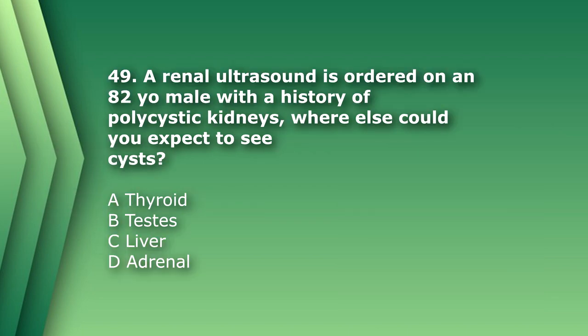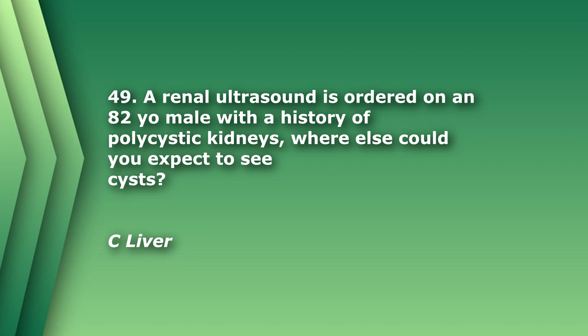Number 49. A renal ultrasound is ordered on an 82-year-old male with a history of polycystic kidneys. Where else could you expect to see cysts? A. Thyroid. B. Testes. C. Liver. D. Adrenal. The answer is C, liver. Patients with autosomal dominant polycystic kidney disease can later on develop cysts of the liver and pancreas.